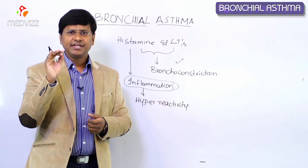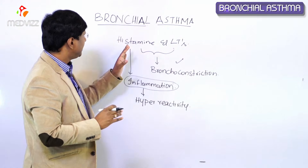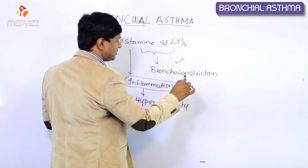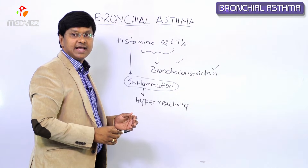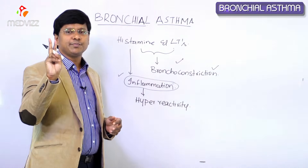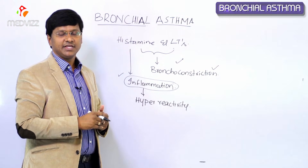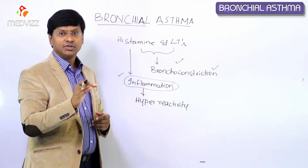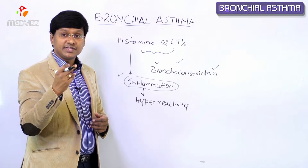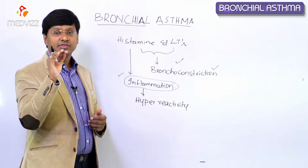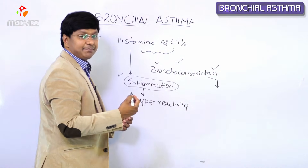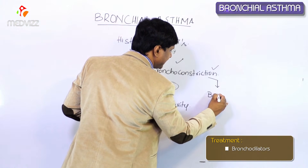In bronchial asthma, there are two important problems: bronchoconstriction and inflammation. These are the two important problems the individual faces. To treat bronchoconstriction — which causes difficulty in breathing — you have to give bronchodilators.